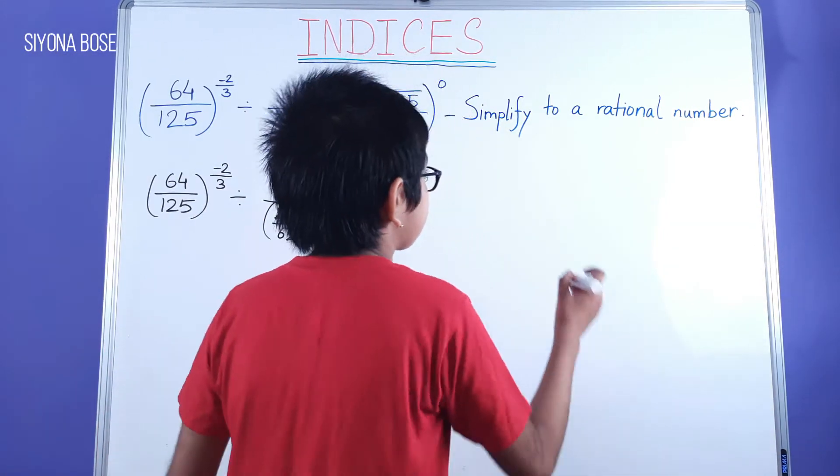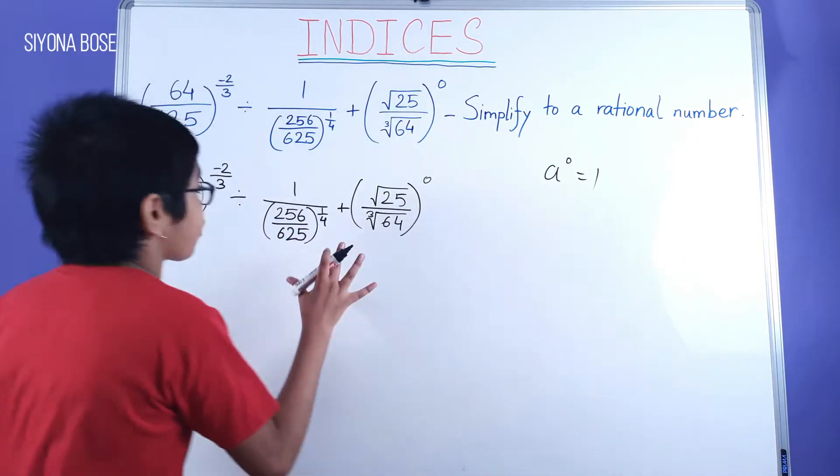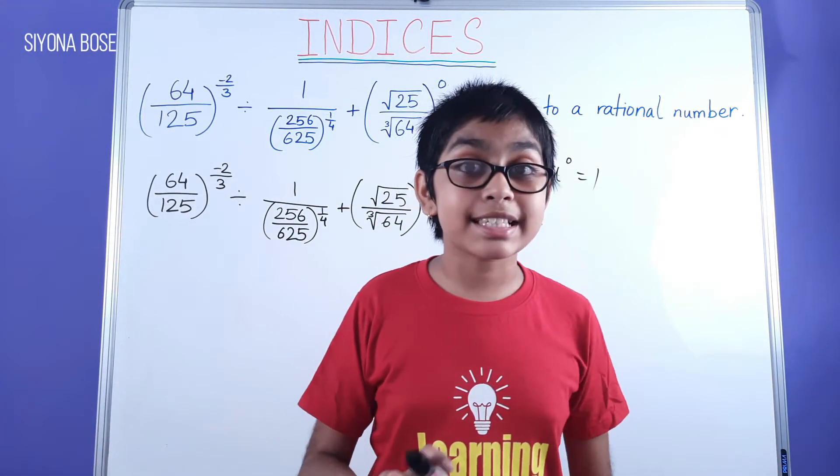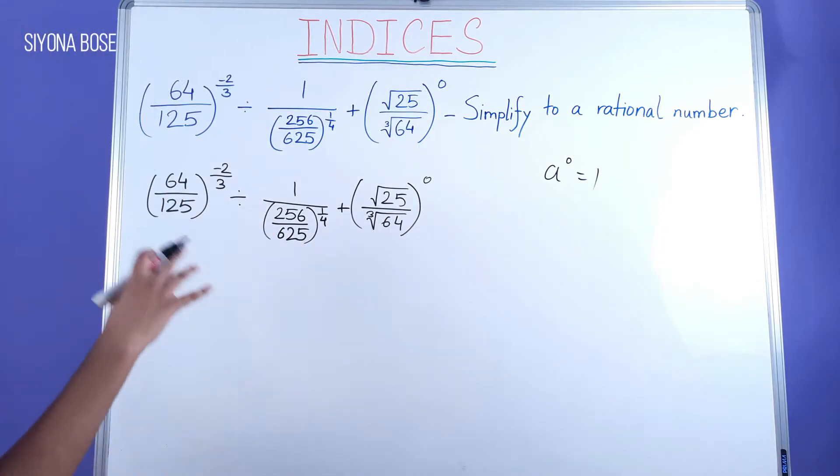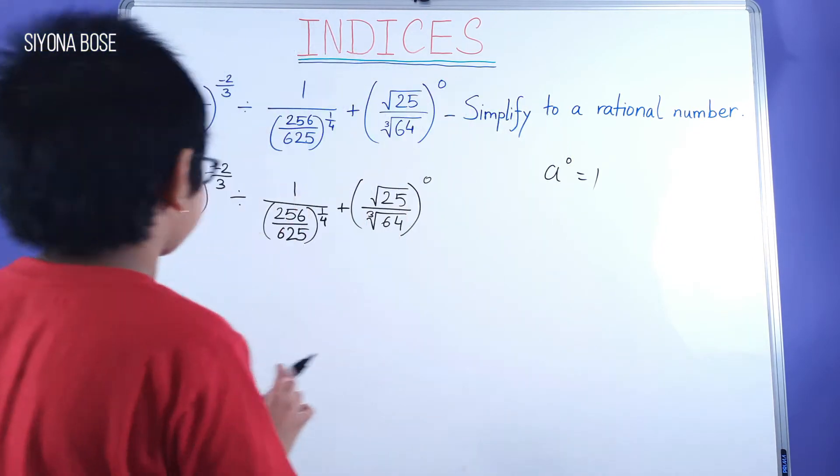Okay, now we know that if it's like a to power of 0, it's equal to 1. So straight away, no need to look at whatever is inside. The whole thing is to the power of 0. So there itself, the sum becomes 10 times easier. It's 1.